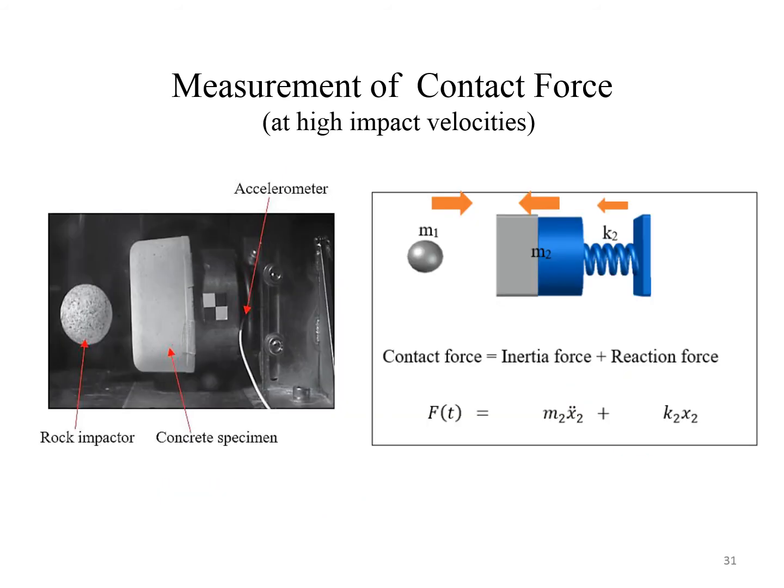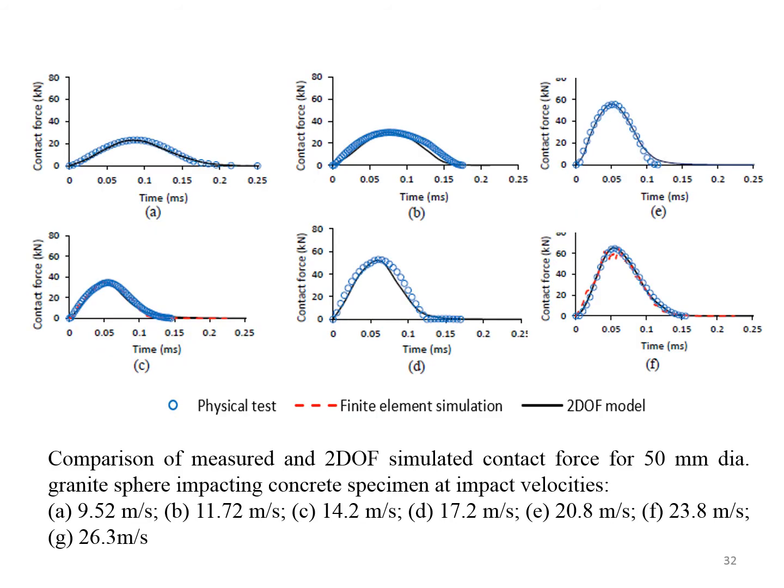Another type of impact test involving the use of a gas gun to fire a rock specimen onto a concrete specimen has also been conducted. As shown on this slide, the forcing function of contact obtained by the two degree of freedom system model is in excellent agreement with both measurements from the impact test and also from finite element simulations.